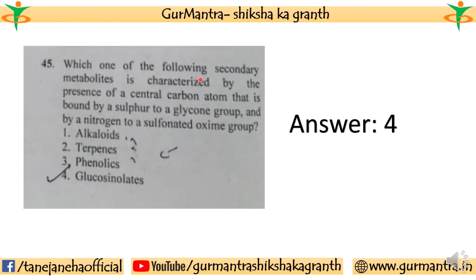Question 45: Which one of the following secondary metabolites is characterized by the presence of a central carbon atom bound by a sulfur to a glycon group and by a nitrogen to a sulfonated oxygen group? The correct answer for this question is the fourth one.